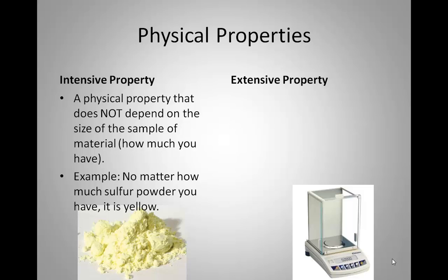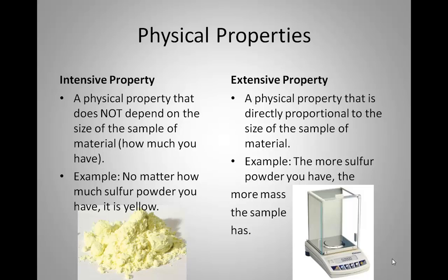An extensive property, on the other hand, is a physical property that is directly proportional to the size of the sample of material. For example, with sulfur — the pea-sized amount versus the classroom-sized amount — the more sulfur you have, the more mass that sample has. It makes sense: the more of something you have, the more mass it has. Yet its color is not going to change. That's intensive versus extensive.